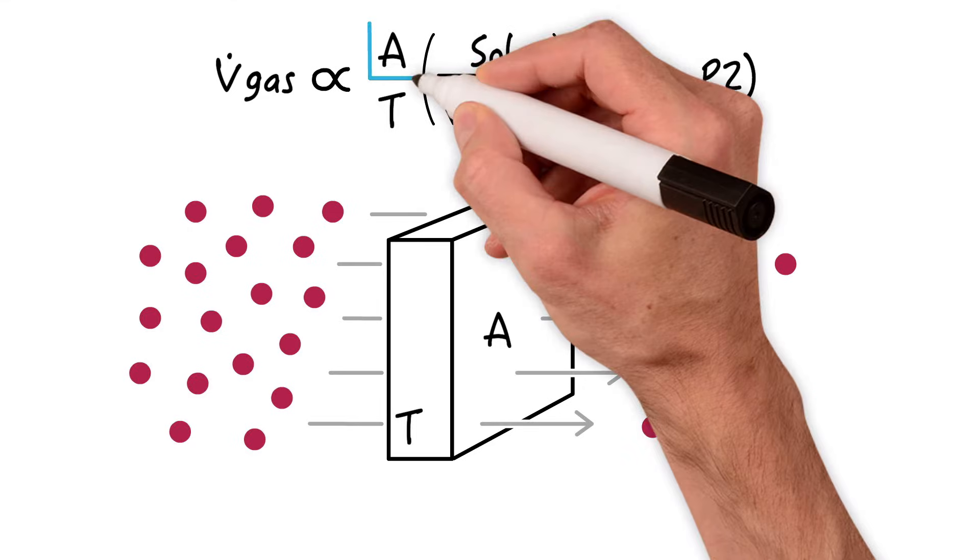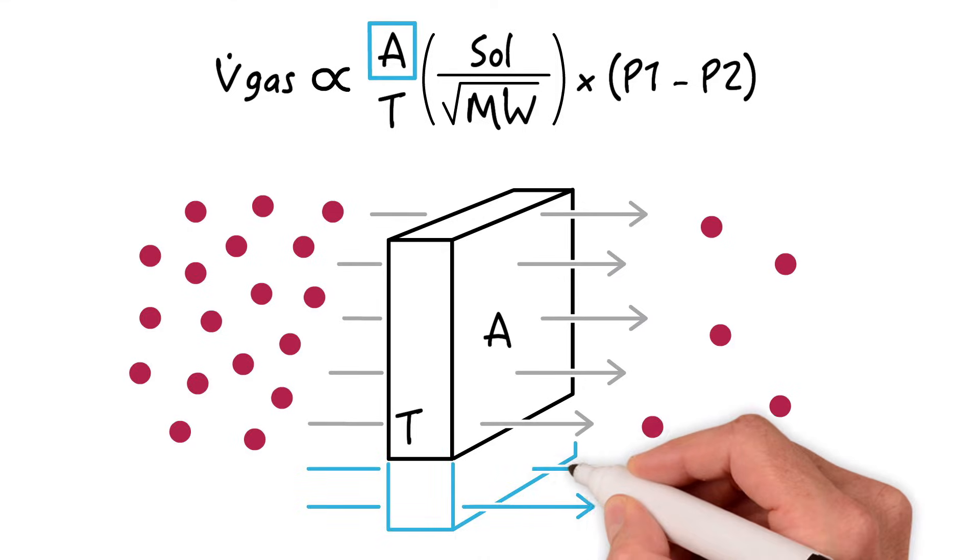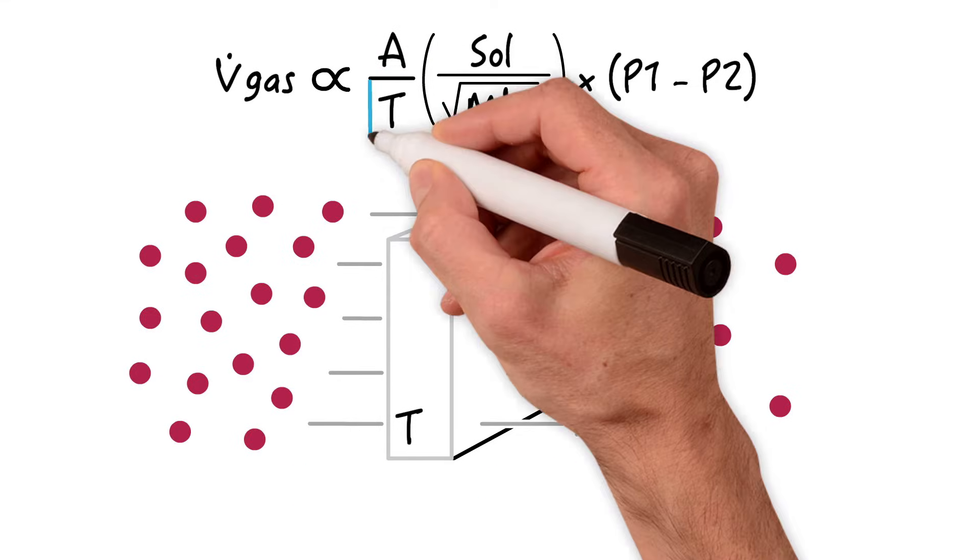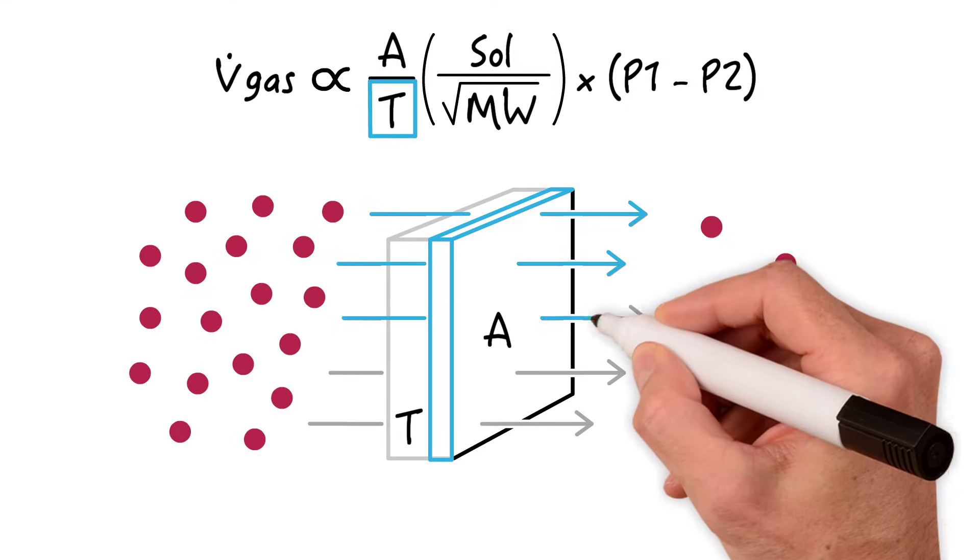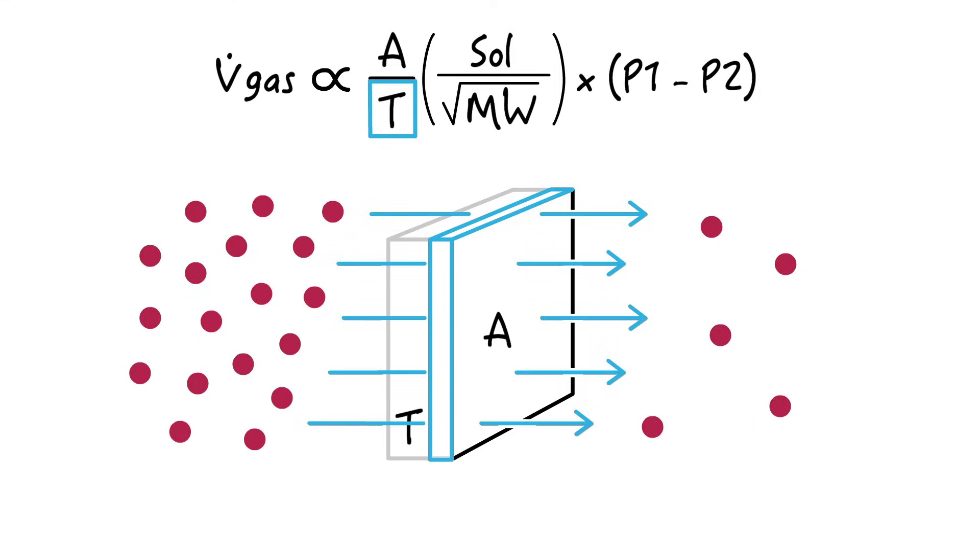Diffusion is enhanced if there is more membrane surface area available for gas transfer. Diffusion is enhanced if membrane thickness is reduced, constituting a shorter path length for gas transfer.